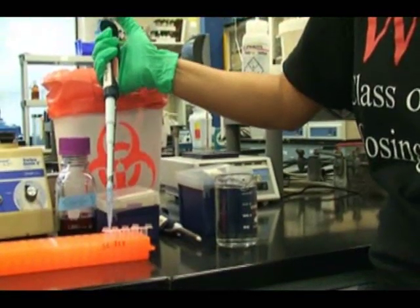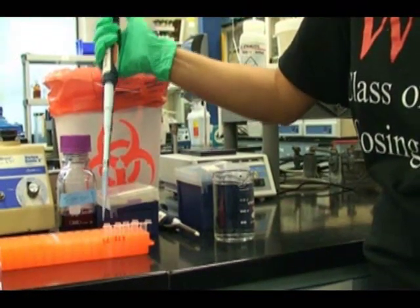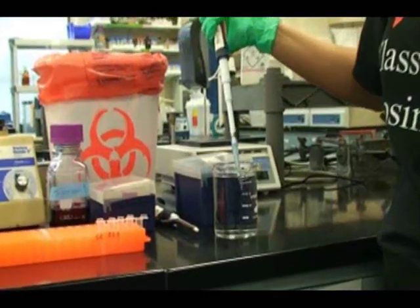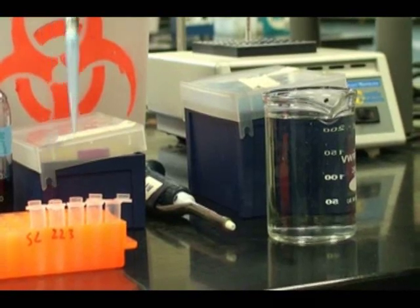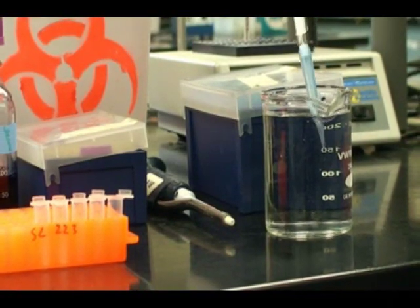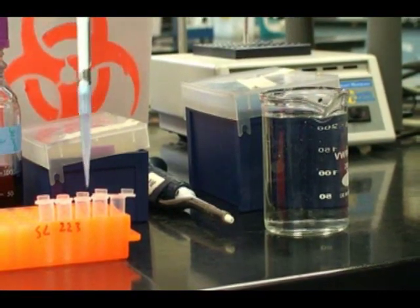The number of tubes you use will be dependent on the end concentration you want. In this example, the end concentration will be 1 out of 100,000 or down to the negative 5. So there will be 5 1.5 milliliter tubes used.